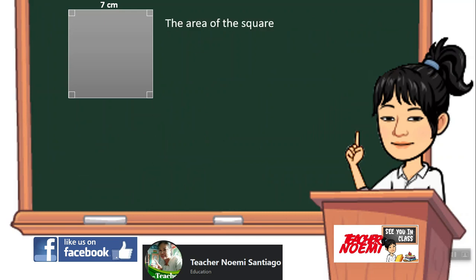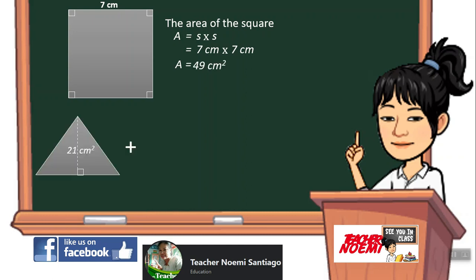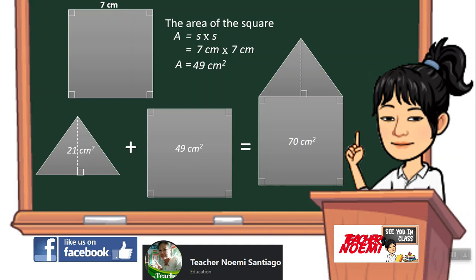Now let us find the area of the square. The formula is A equals S times S: 7 centimeters times 7 centimeters equals 49 square centimeters. The total area of the composite figure is the area of the triangle plus the area of the square: 21 square centimeters plus 49 square centimeters equals 70 square centimeters.